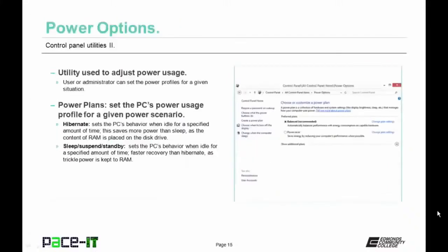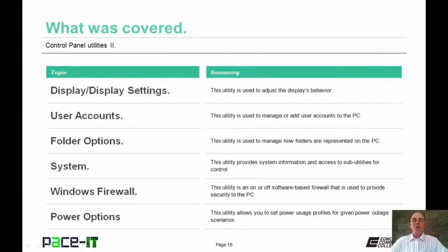The Power Options utility is used to adjust power usage. The user or administrator can set power profiles for any given situation with several different preset power plans. Hibernate sets the PC's behavior when idle for a specified amount of time — it saves more power than Sleep mode as the contents of RAM are placed onto the disk drive. Sleep mode, also called Suspend or Standby, has faster recovery than Hibernate as trickle power is kept to RAM and its contents are preserved.